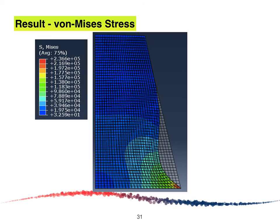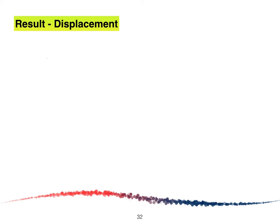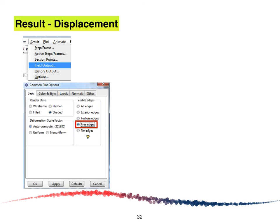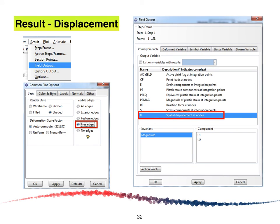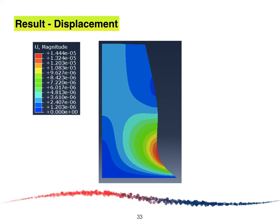The first result is Von Mises stress. The gray color is the original undeformed shape and the color scale shows the deformed result. Next, to view displacement, click on Field Output, select the field edge, and click OK. The Field Output window will appear. Select Displacement at Node and click OK. The magnitude of the displacement will appear on your screen. Note that the element mesh is not shown on this displacement view because we selected Free Edge. This is the end of this tutorial. Thank you.